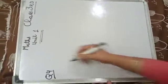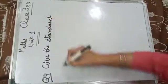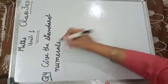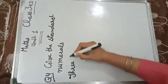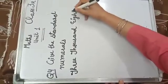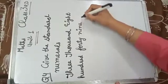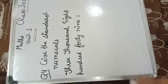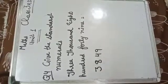Now we give the standard numerals. For example: three thousand, eight hundred, forty-nine. Now you write this in numerals. Write these words in numerals: three thousand eight hundred forty-nine.